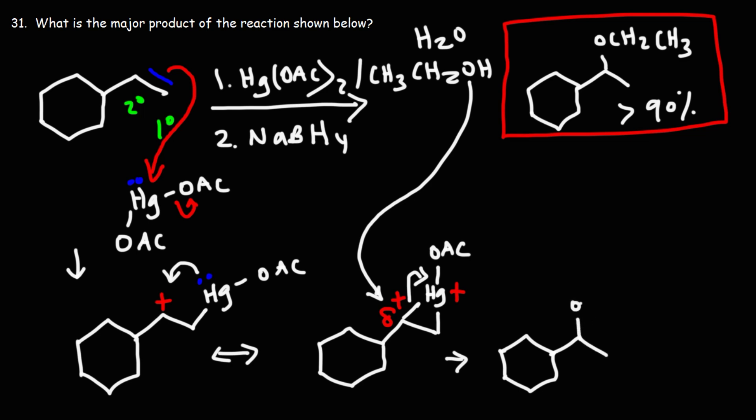So we're going to have an oxygen with a hydrogen and an ethyl group. And over here, we have HgOAc. Now, the oxygen has a positive charge.